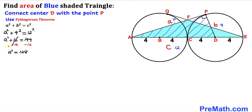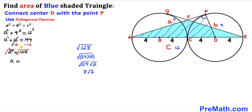Let's undo the square by taking the square root of both sides — the square root and square cancel each other, so A equals the square root of 128. Breaking this down and simplifying, the square root of 128 equals 8 times the square root of 2. So side A turns out to be 8√2.